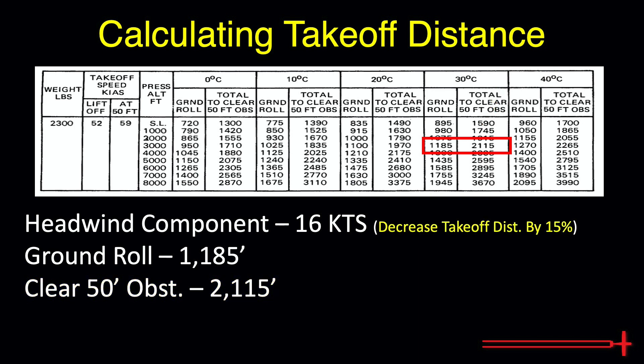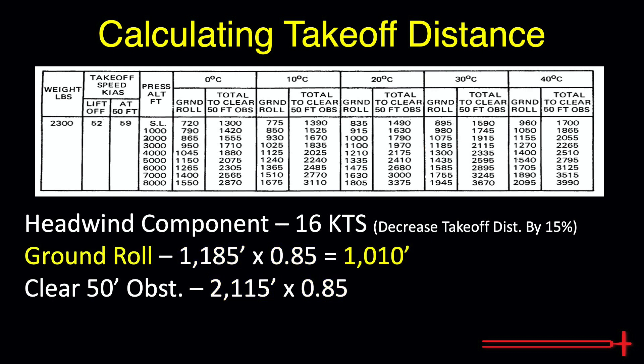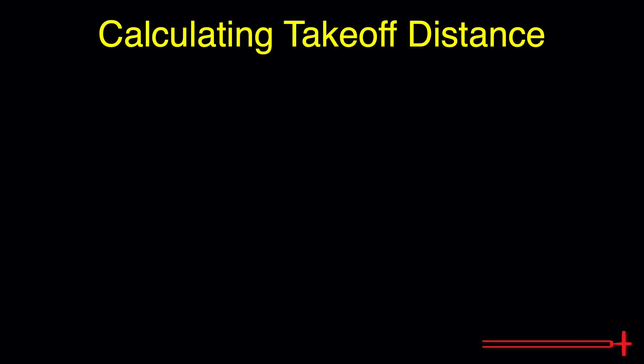Remember that we must decrease these distances by 15% each — in other words, multiply each value by 0.85, or 85% — leaving us with final distances of 1,010 feet for our expected ground roll and 1,800 feet to clear the 50-foot obstacle. These expected distances should be compared to our runway lengths to determine whether or not conditions would make for a safe takeoff.